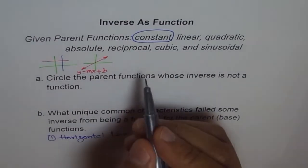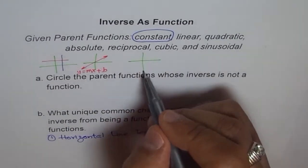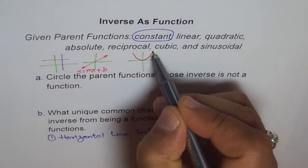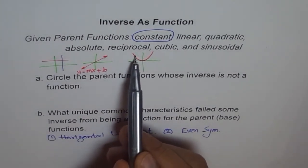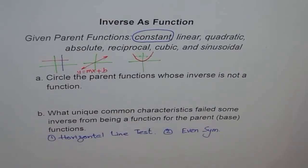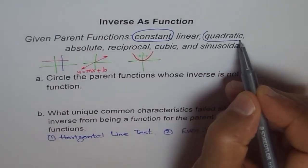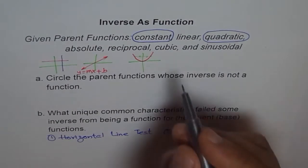How about the quadratic function? Does it fail the horizontal line test, or is it an even function? Yes, it is an even function — and it also fails the horizontal line test. Therefore we can circle the quadratic function as well. Its inverse is not a function.